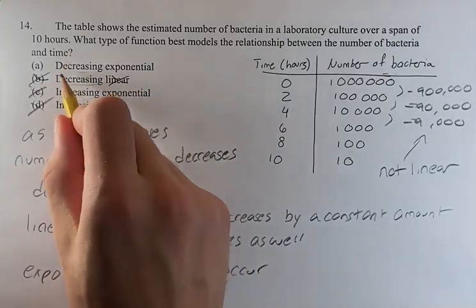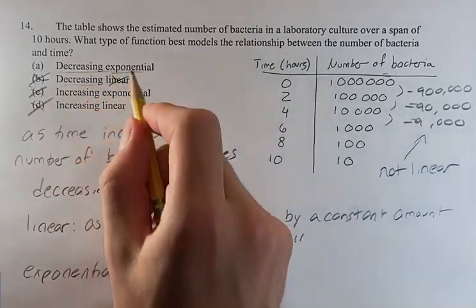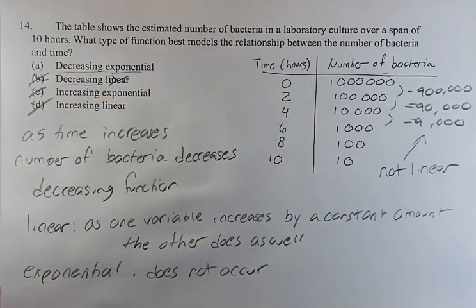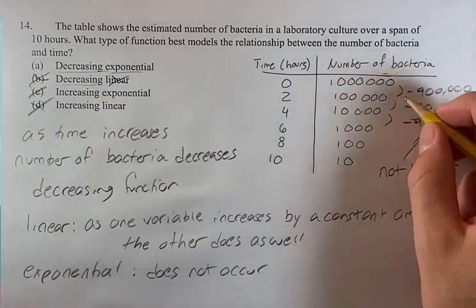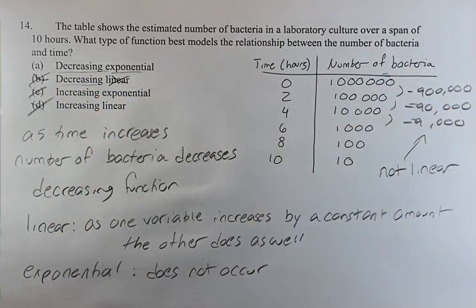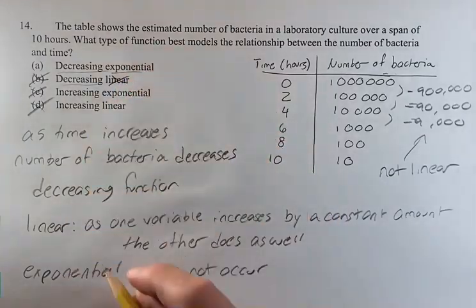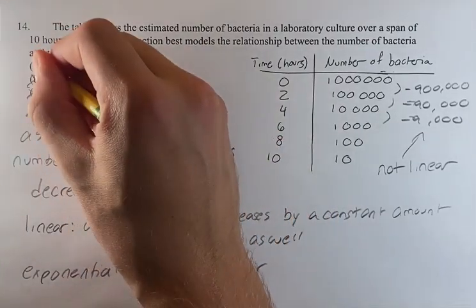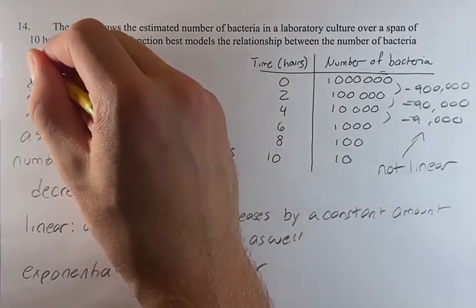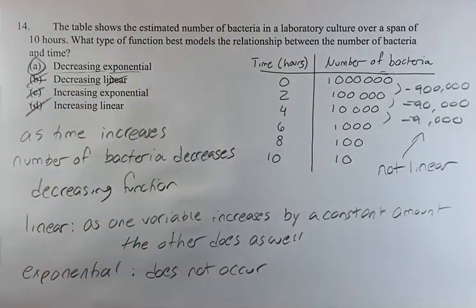That means our only option is decreasing exponential. You don't actually need to know that this is an exponential relationship — the only two options are exponential and linear, and we know it's not linear, so it must be exponential. So that's going to be our answer: A.